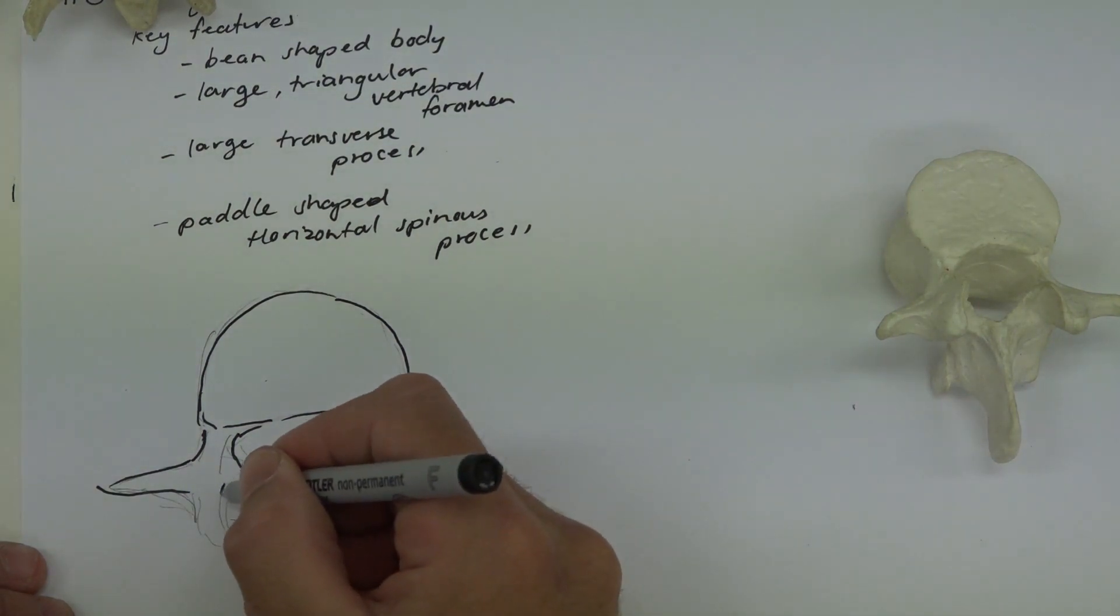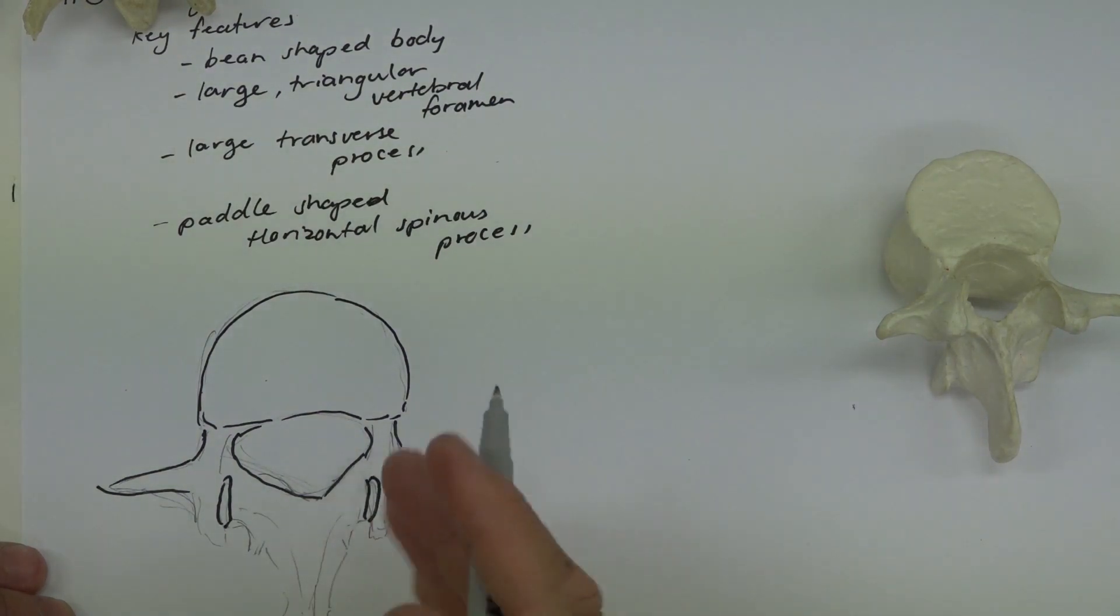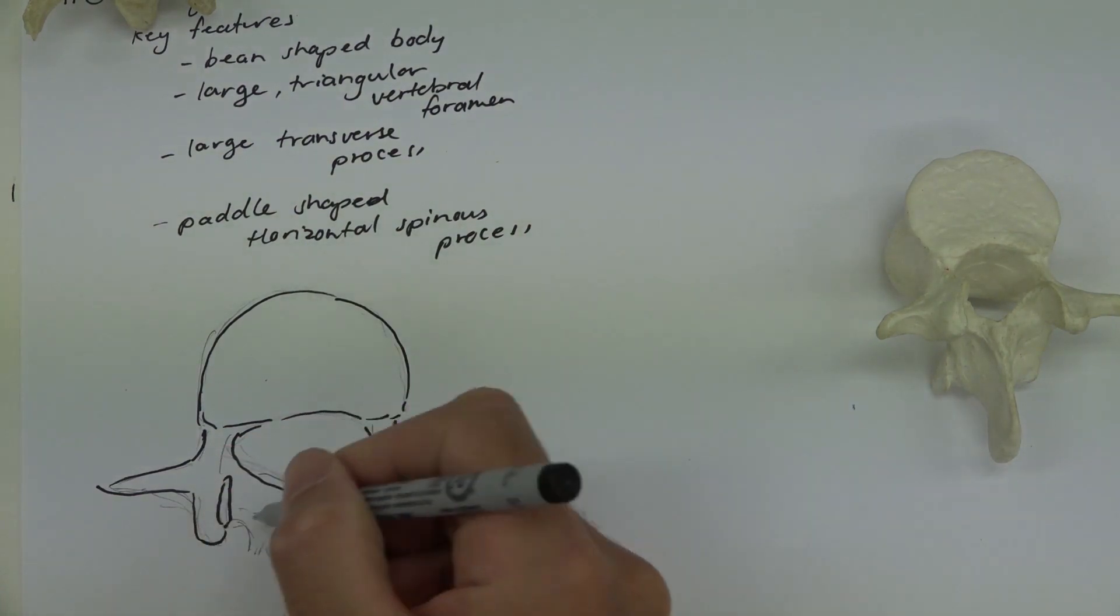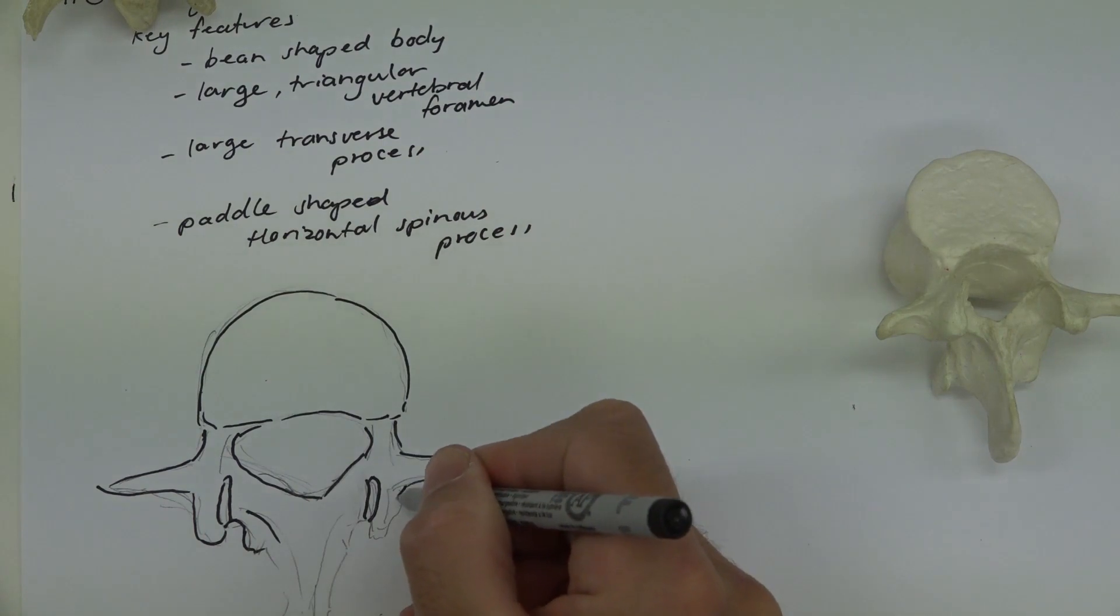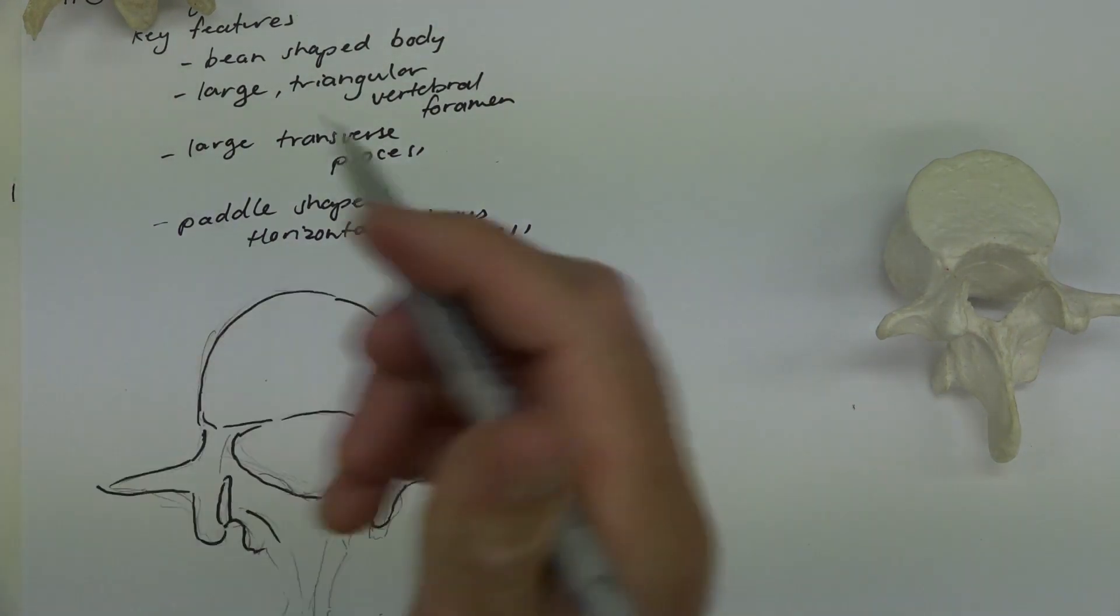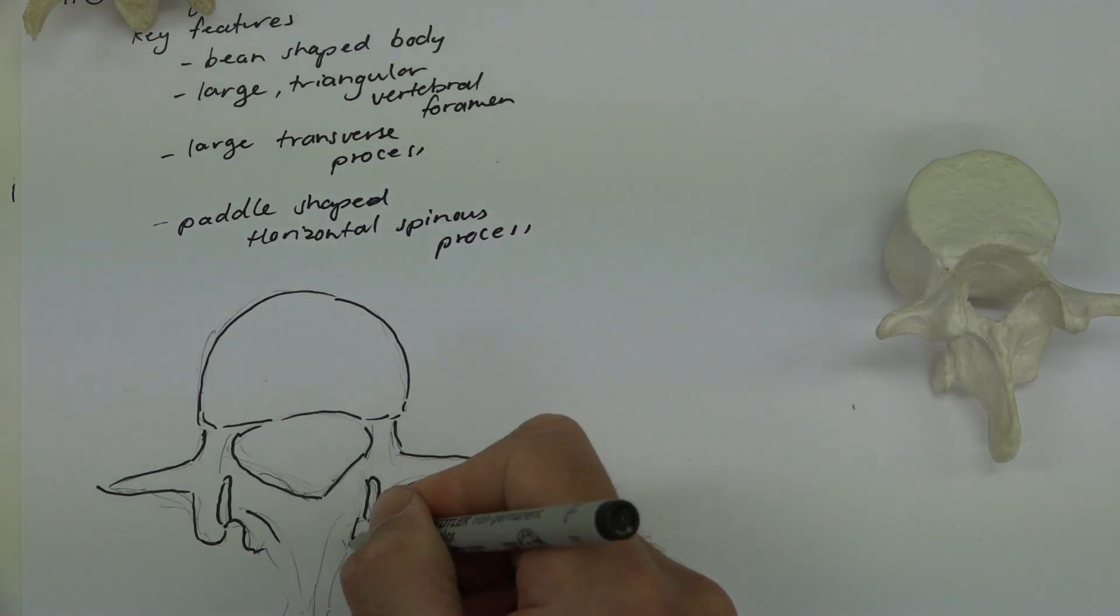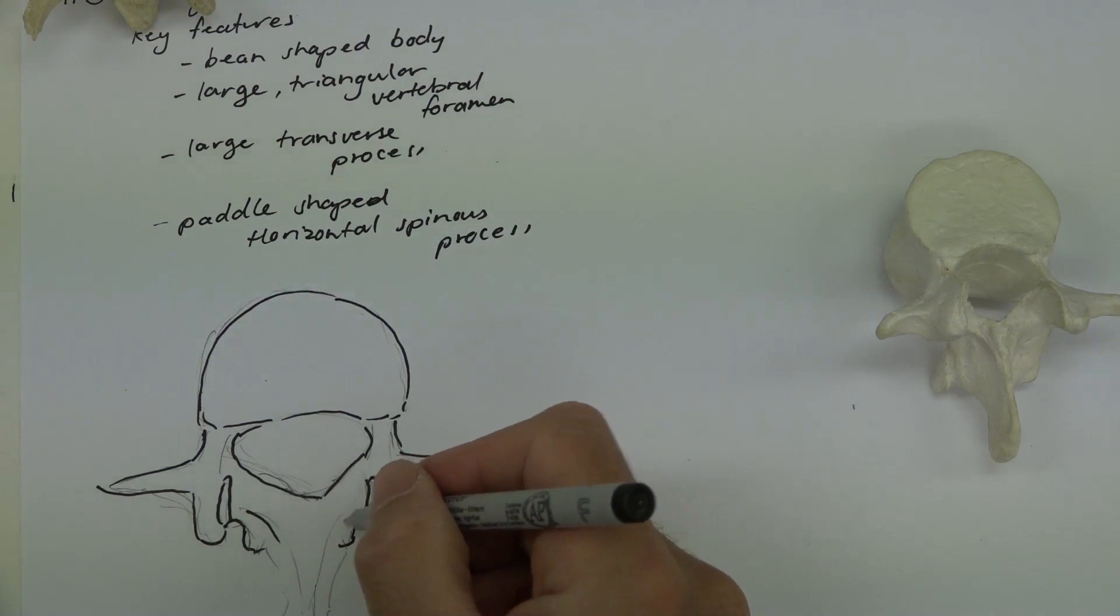Then here we have the superior articular facets. Now, if you notice that their orientation is now this way. So they are orientated in the sagittal plane, whereas in the thoracic, they are orientated in the coronal plane. Here then we have the articular processes, and these articular processes here are for attachment to some other muscles as well and some ligaments.